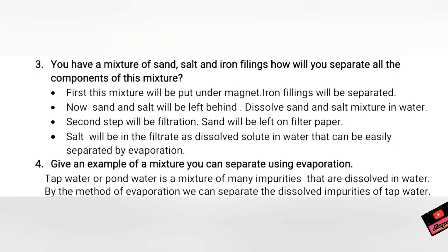Question three: You have a mixture of sand, salt, and iron filings. How will you separate all components? We will use two techniques. First, the mixture will be poured under a magnet so the iron filings can be separated. Now we are left with sand and salt, which will be dissolved in water.